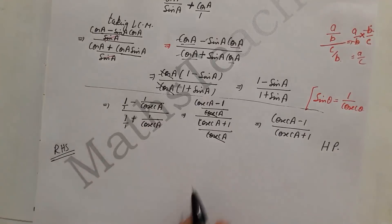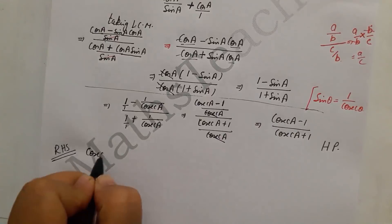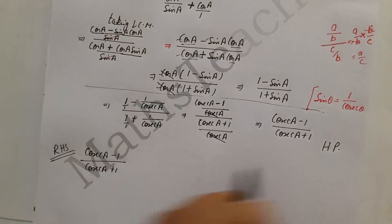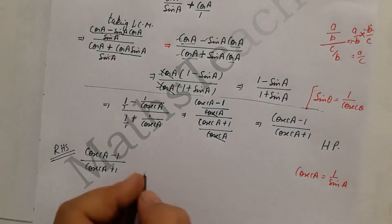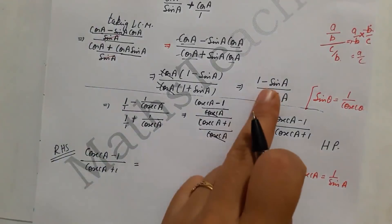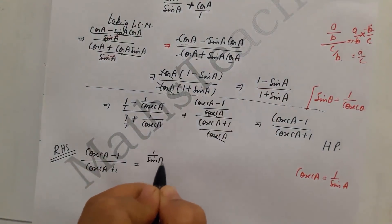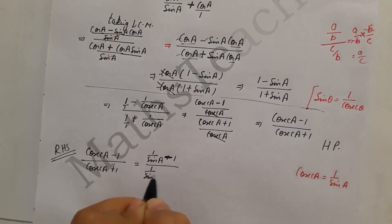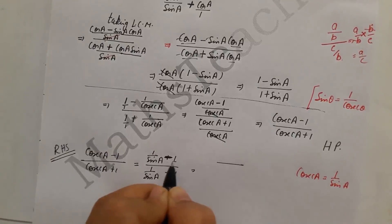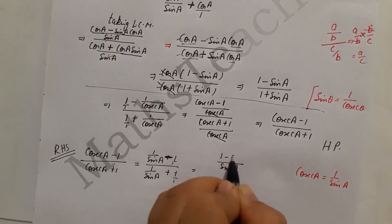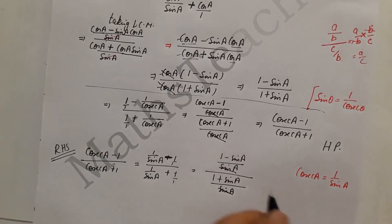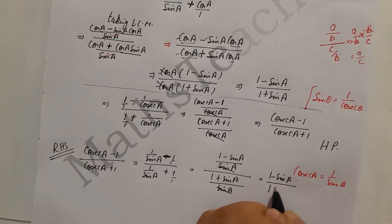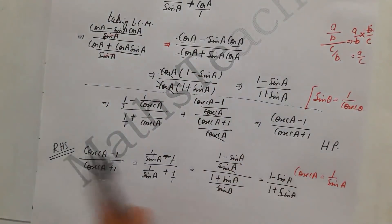Alternatively, if you start from the right hand side with cosec A minus 1 divided by cosec A plus 1, and put cosec A as 1 by sin A, you get: 1 by sin A minus 1 over 1 by sin A plus 1. Taking LCM sin A: (1 minus sin A) divided by sin A, over (1 plus sin A) divided by sin A. The sin A cancels, giving 1 minus sin A divided by 1 plus sin A — proved.